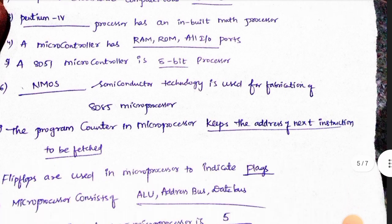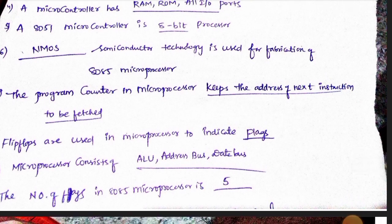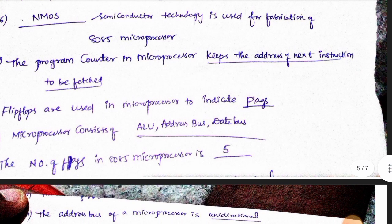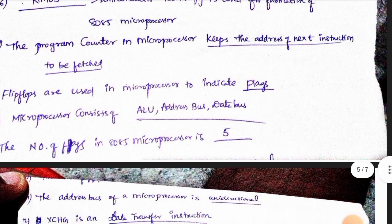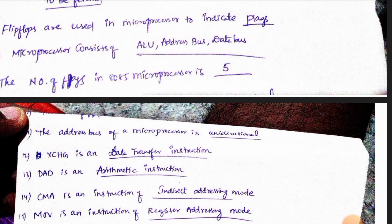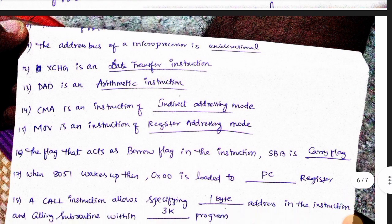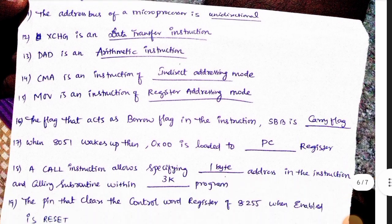NMOS semiconductor technology is used for the fabrication of the 8085 microprocessor. The program counter in the microprocessor keeps the address of the next instruction to be fetched. Flip-flops are used in the microprocessor to indicate flags. A microprocessor consists of ALU, address bus, and data bus. The number of flags in the 8085 microprocessor is 5. The address bus of the microprocessor is unidirectional. Exchange is a data type of data transfer instruction. DAD is an arithmetic instruction.